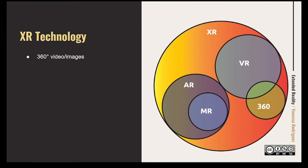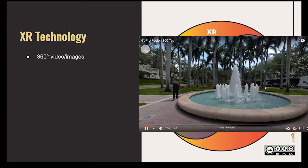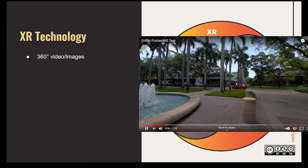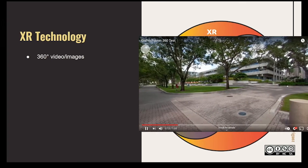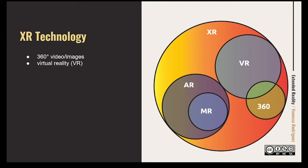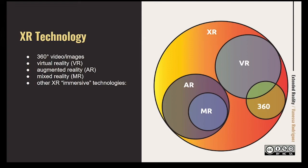360 videos or images are taken with either one camera with several photographs stitched together, or a 360 video camera. As you move the technology — say your phone — you can see the entire 360 environment as opposed to a two-dimensional photograph. Virtual reality is a completely immersive experience. Augmented reality doesn't currently interact with virtual reality but is still part of XR. Mixed reality is a part of augmented reality, but not all augmented reality is mixed reality. There are other XR immersive technologies in that orange-yellow space in the diagram that sometimes interact with VR and AR, but not necessarily.